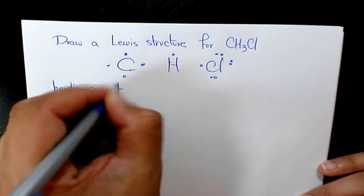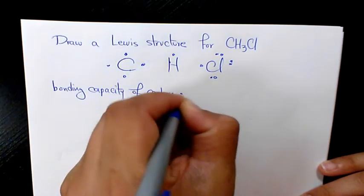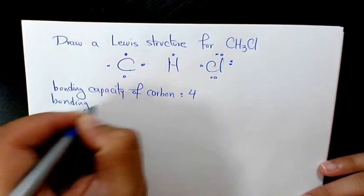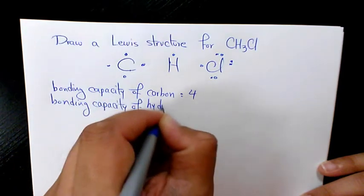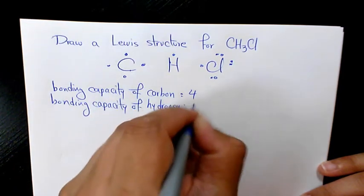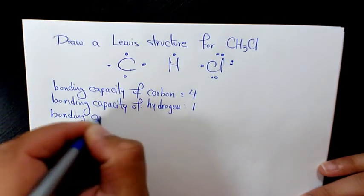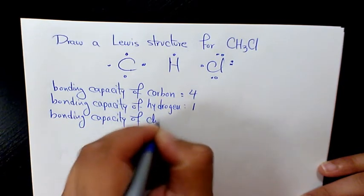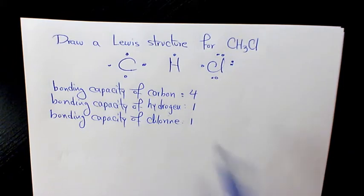Now let's look at the bonding capacity. Bonding capacity of carbon is four, bonding capacity of hydrogen is one, and bonding capacity of chlorine is one as well, because we have only one unpaired electron and the rest are lone pairs.